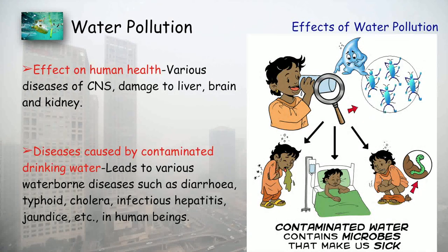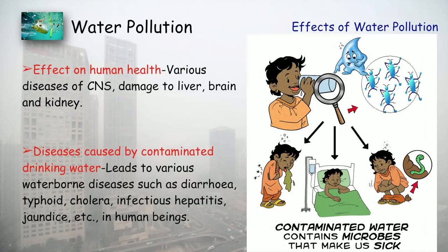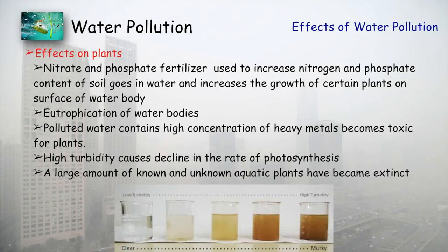Now let's talk about the effects of water pollution. Drinking poor quality water can cause many diseases such as damage to the central nervous system, liver, brain, and kidney. Many contaminated waterborne diseases such as diarrhea, typhoid, cholera, infectious hepatitis, and jaundice are very common and are mostly seen in the rainy season when water quality is really bad.